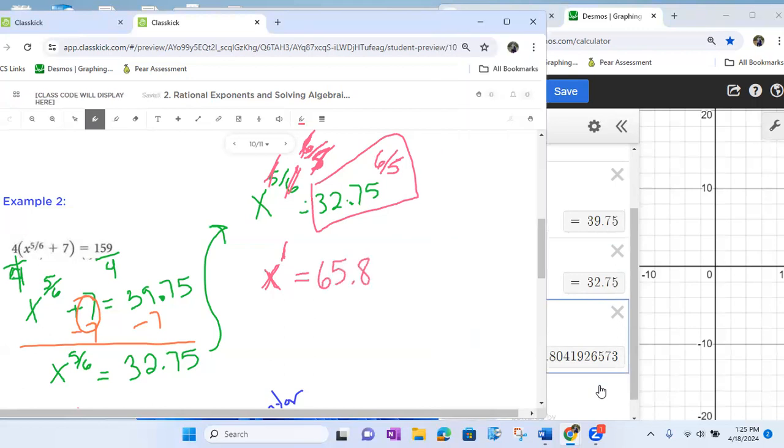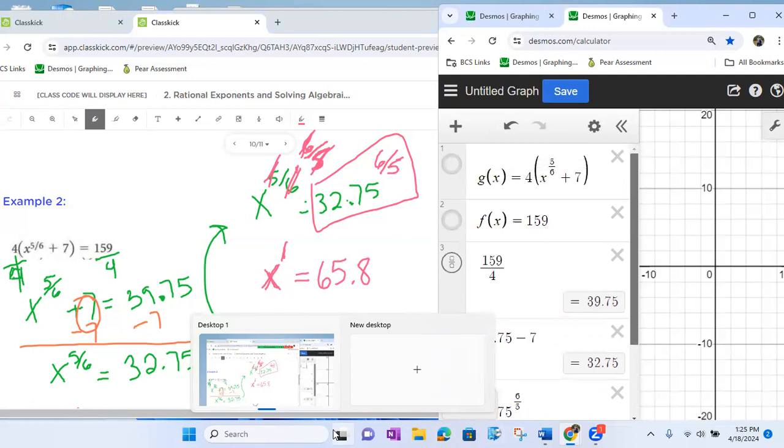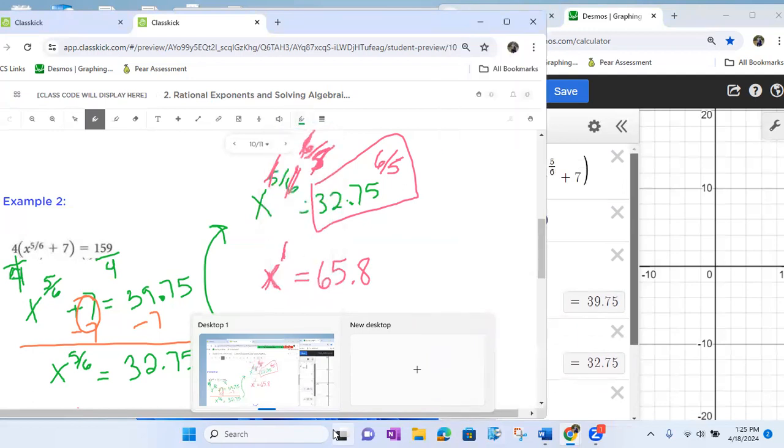Now, of course, what we are going to do is we are going to check our work by typing it in. So we're going to type it in. Notice I've already done that. So what I've done is I've given this one the name of g of x. I love to name my functions so I can keep track of them. This is f of x.